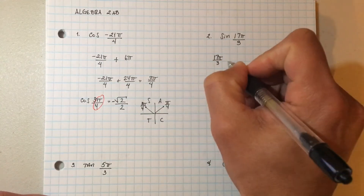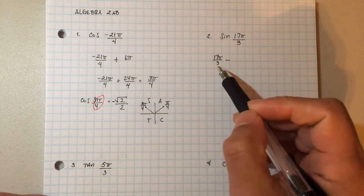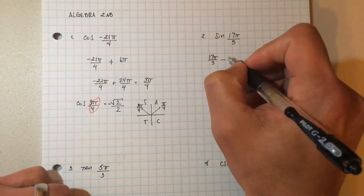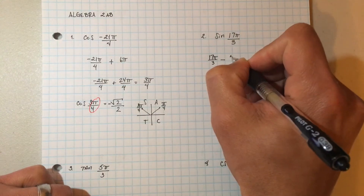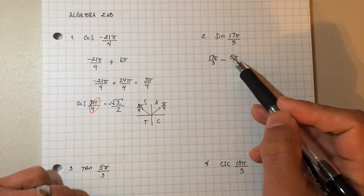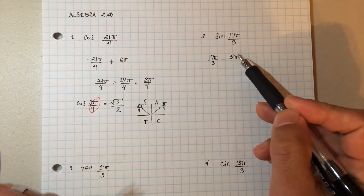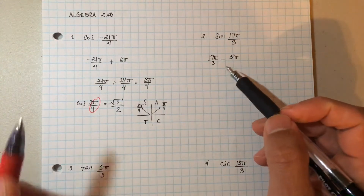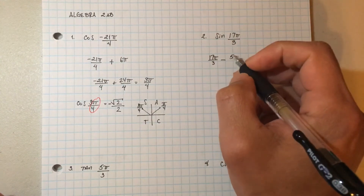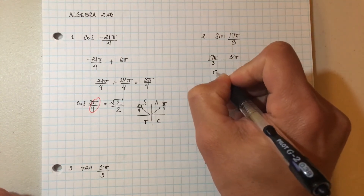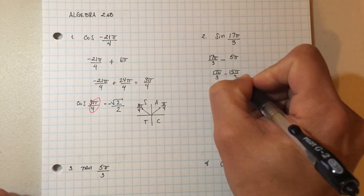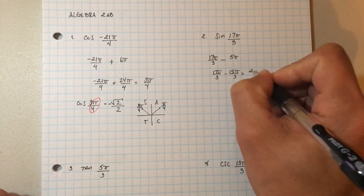17π over 3 minus — how many times does 3 go into 17? 5 times. I don't want to use 6, because if it were 6 then I would get 18, and 17 minus 18 gives me a negative angle, and I don't want a negative. So I want to get close but still maintain a positive. 3 times 5 is 15, so that's going to give me 17π over 3 minus 15π over 3. Subtracting gives me 2π over 3.